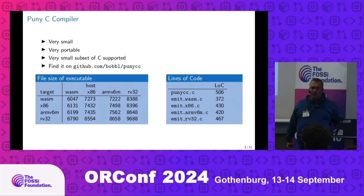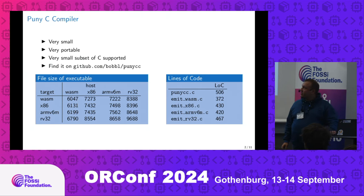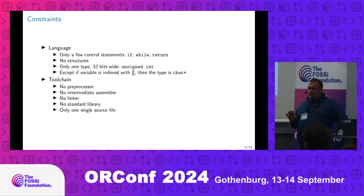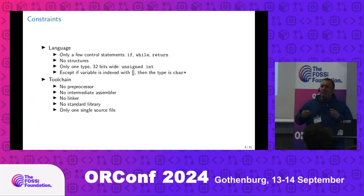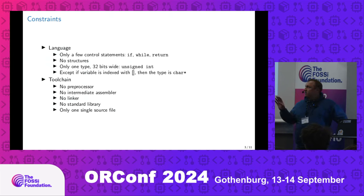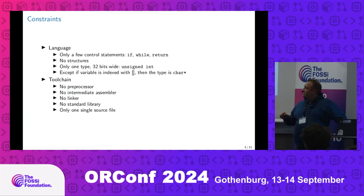How can you make a compiler so small? You have to do a lot of restrictions. The language is very restricted — you only have if, while, and return, and no others like continue or for loops. You don't have structures or typedefs. The most important restriction that makes the compiler really easy is you only have one type: a 32-bit number. You can use it as an unsigned int or as a pointer to a char array. With it, it's really possible to write programs — Pony C can compile itself.